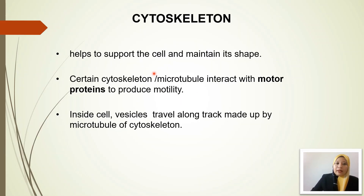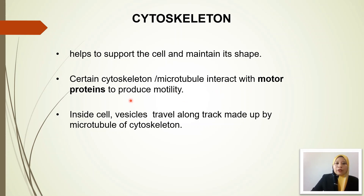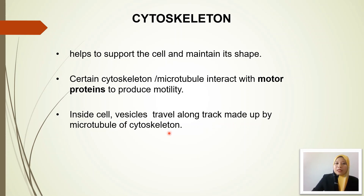The functions of the cytoskeleton include: first, supporting the cell and maintaining its shape. Certain cytoskeleton types like microtubules interact with motor proteins to produce motility or movement. Inside the cells, vesicles travel and move along tracks made up by microtubules of the cytoskeleton.